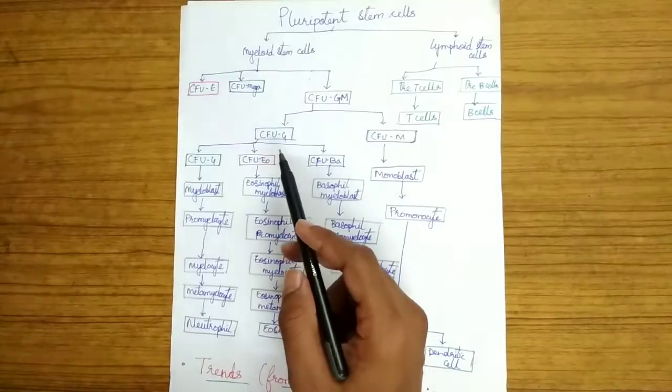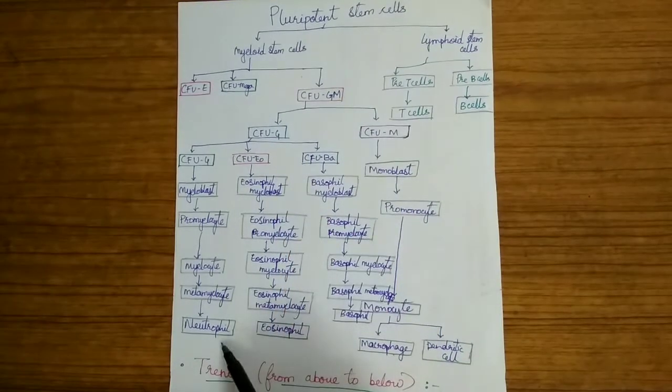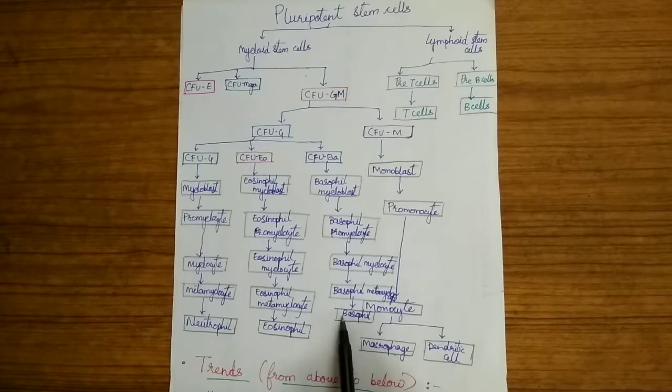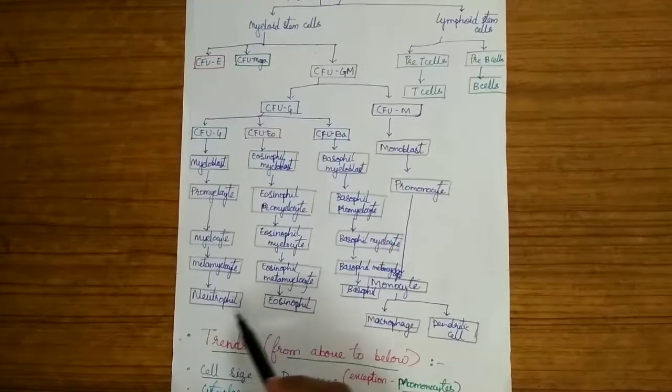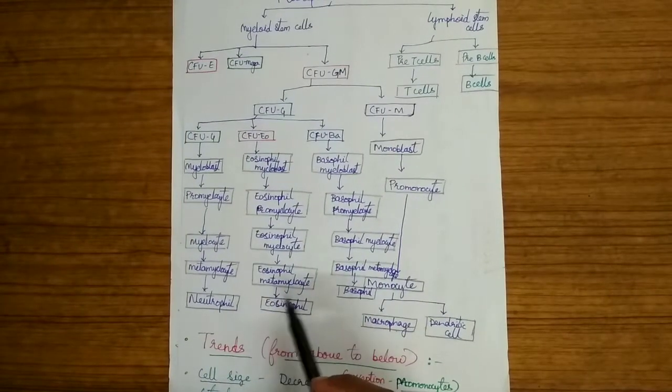The colony forming units of granulocyte ultimately form the granulocyte cells which are neutrophil, eosinophil and basophil. Those are called granulocyte cells because they contain granules in the cytoplasm.